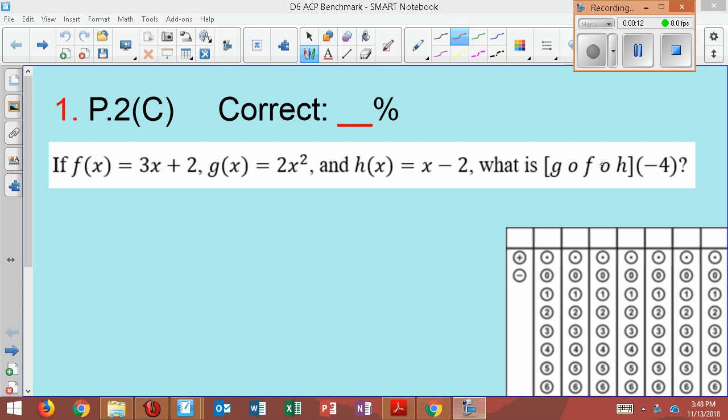Alright, so the technique here when we have g of f of h, what this is is a composite function, which means it's just multiple functions put together. This is the exact same thing as g of f of h of negative 4. You can also write it this way. There's three open parentheses, so I need three closed parentheses.